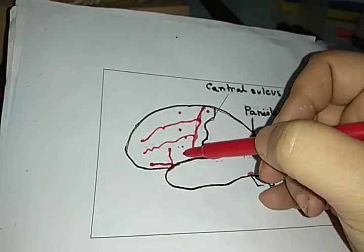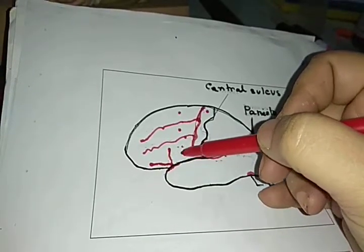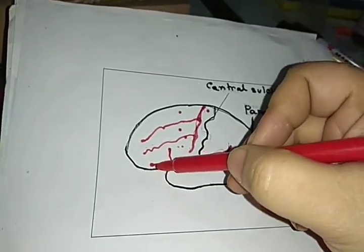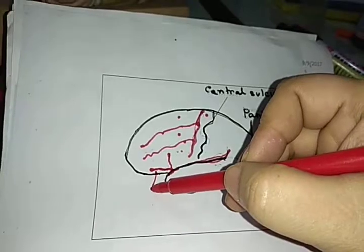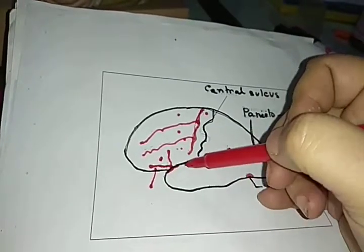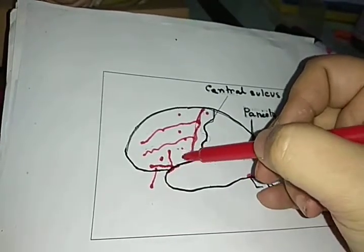The inferior frontal gyrus is again divided into three parts: pars orbitalis, pars triangularis, and pars opercularis.